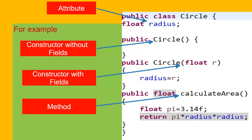Constructors are not the members of a class, so they are not inherited into the subclasses. This is one of the exceptions in inheritance — constructors are the only thing which are not inherited into the subclasses. In Java classes there can be only three members: fields, methods, and other classes or interfaces.